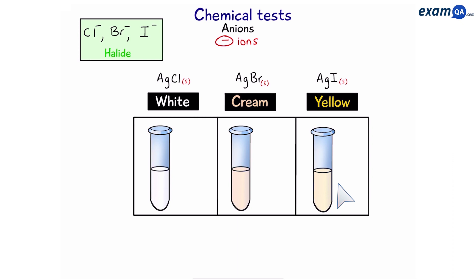So if we have silver chloride we can add dilute ammonia and it will dissolve giving us a clear solution. With silver bromide dilute ammonia will not have any effect.